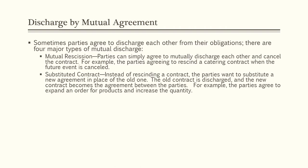Then there's substituted contract. Instead of rescinding a contract, the parties want to substitute a new agreement in place of the old one. The old contract is discharged and the new contract becomes the agreement between the parties. For example, if the parties agree to expand an order for products and increase the quantity, the new contract with the higher quantity becomes the controlling contract and the old contract with the lower quantity is discharged.